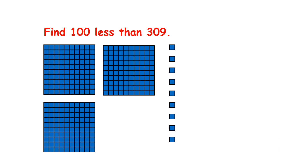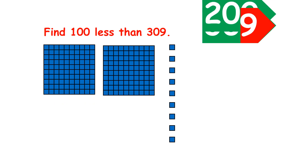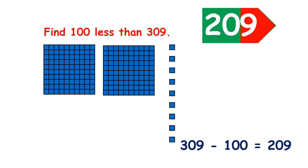What is one hundred less than three hundred and nine? We have three hundredths and nine units. If we subtract a hundred, now we have two hundredths, still no tens, and nine units. So three hundred and nine minus a hundred equals two hundred and nine.